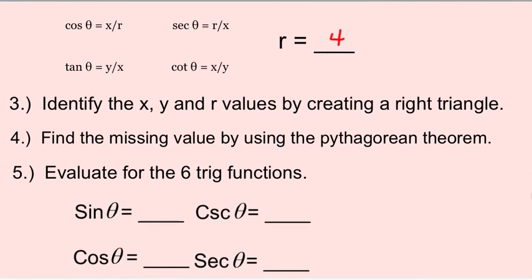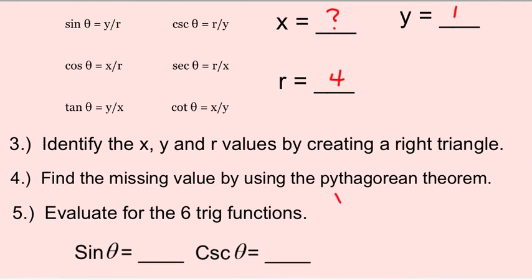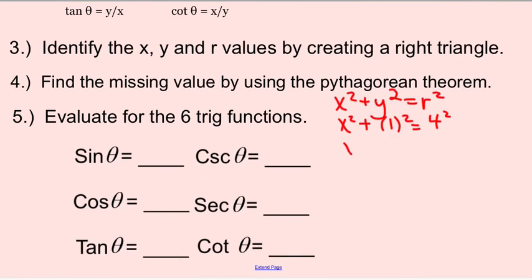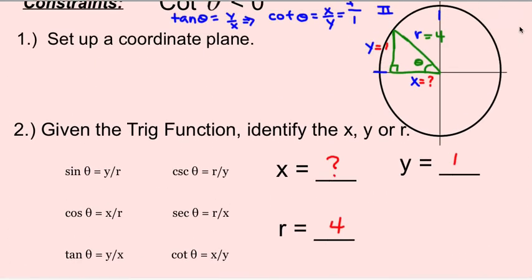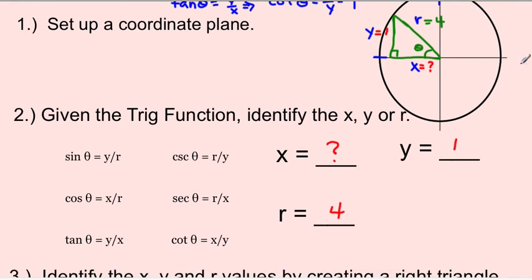So we have to find that missing part using the Pythagorean theorem. x squared is unknown, y squared is 1, r squared is 4 squared. So x squared plus 1 equals 16. x squared equals 16 minus 1. x squared equals 15. So x equals plus or minus the square root of 15. Since it's quadrant two, it has to be a negative square root of 15. So we'll change x to negative square root of 15.